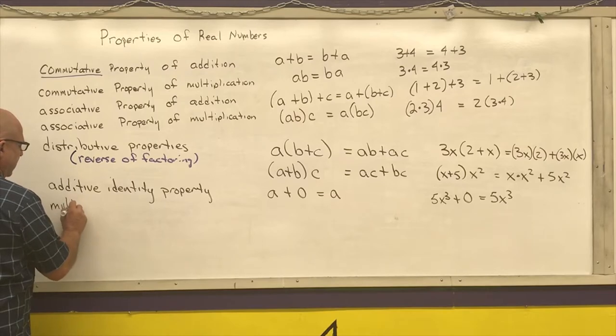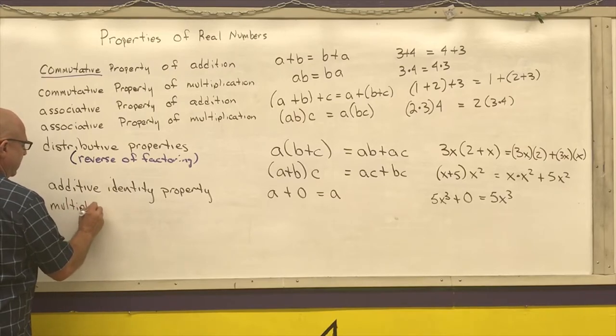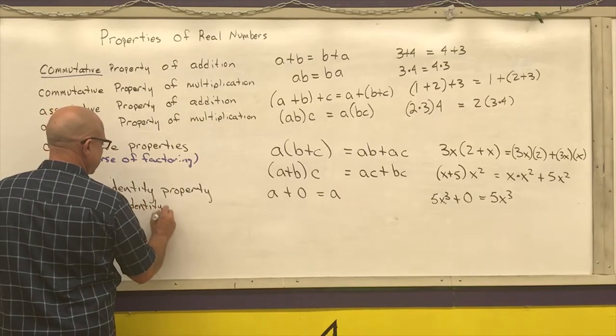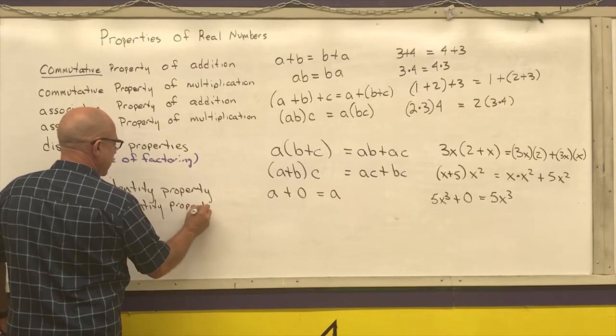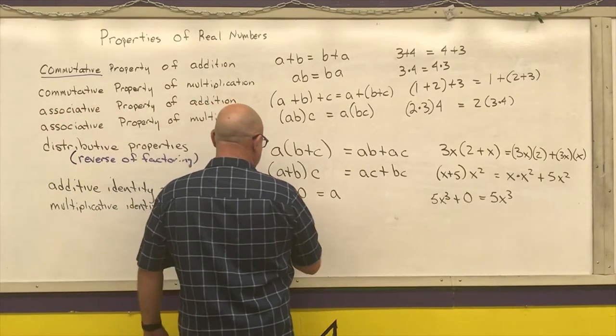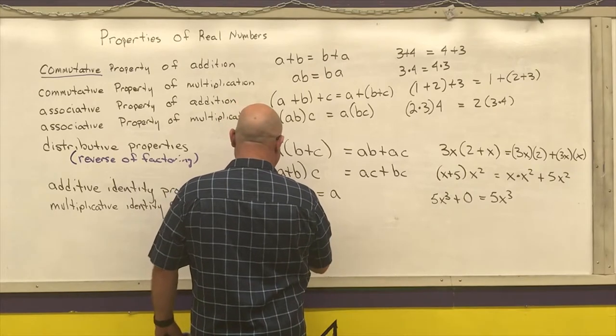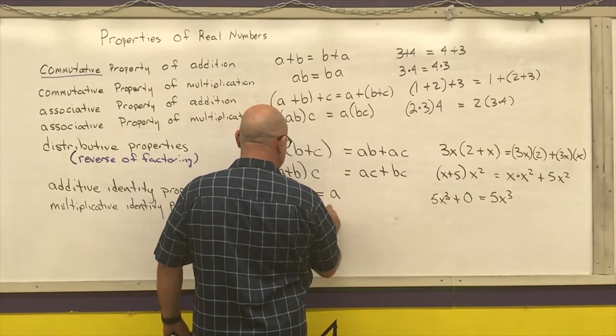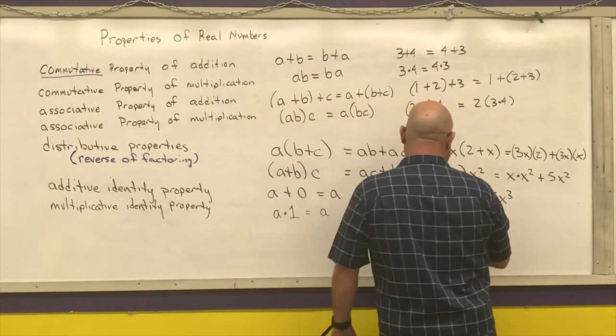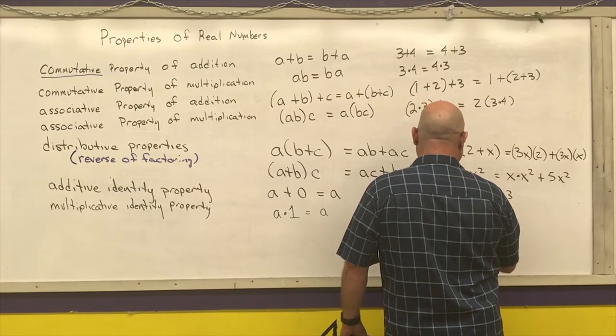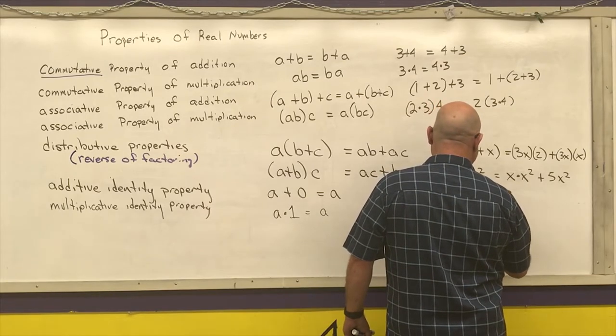Next, we have the multiplicative identity property. An identity property is something that gets me back to my original number. So multiplicative identity property is A times 1 gives me back just A. If I have 3x squared times 1, I just write down 3x squared.